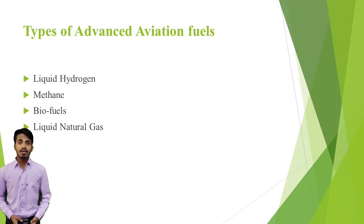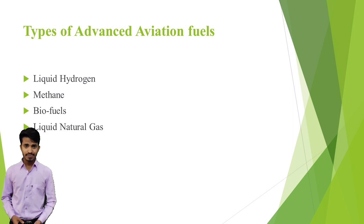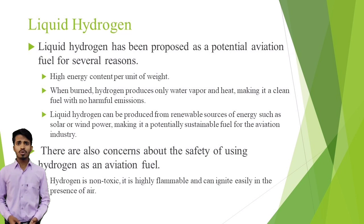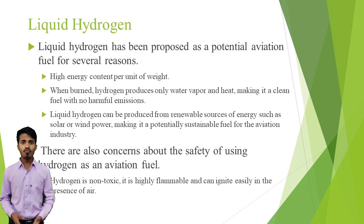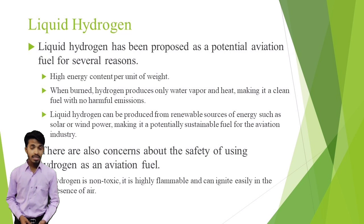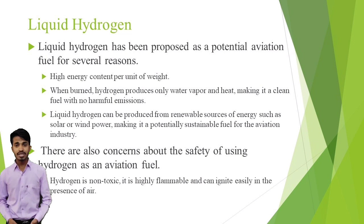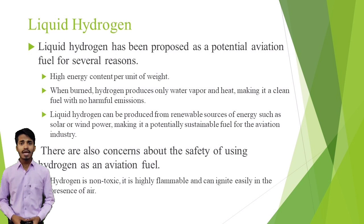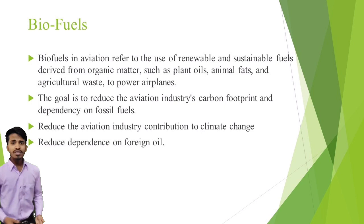In this slide we discuss some advanced alternative fuels like liquid hydrogen, methane, biofuel, and liquefied natural gas. Liquid hydrogen has been proposed as a potential aviation fuel for several reasons: it has high energy content per unit of weight, and when burned, hydrogen produces only water vapour and heat, making it a clean fuel with no harmful emissions. Liquid hydrogen can be produced from renewable sources of energy such as solar or wind power, making it potentially sustainable. However, there are concerns about safety — hydrogen is highly flammable and can ignite easily in the presence of air.